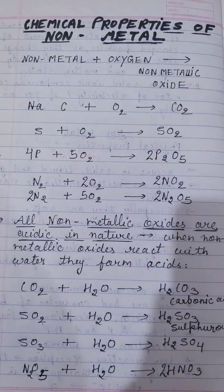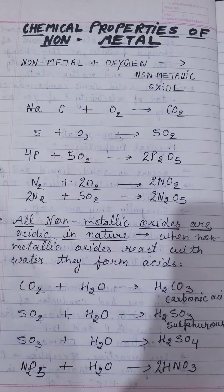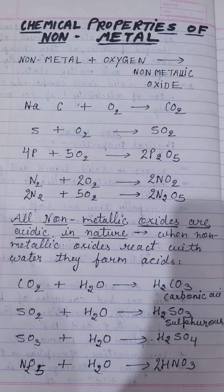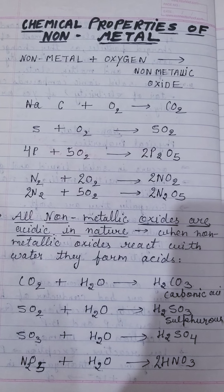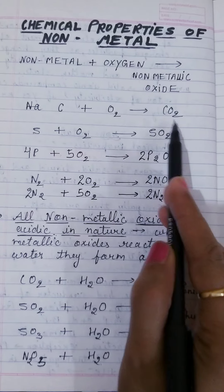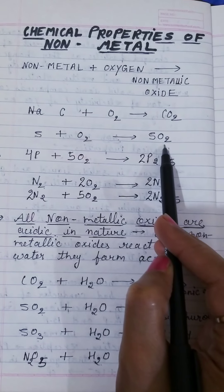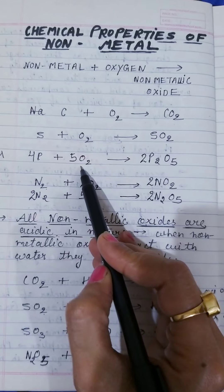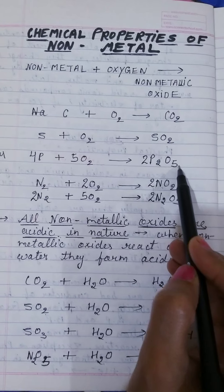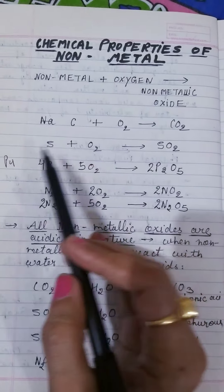The first chemical property: when non-metals react with oxygen they form non-metallic oxides. As I have written: C + O₂ forming CO₂; S + O₂ forming SO₂; and 4P + 5O₂ forming 2P₂O₅. I have written the balanced equations for you.